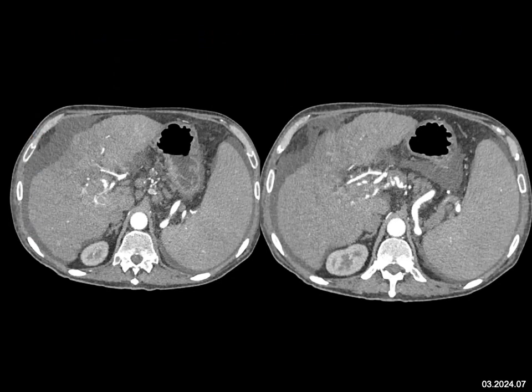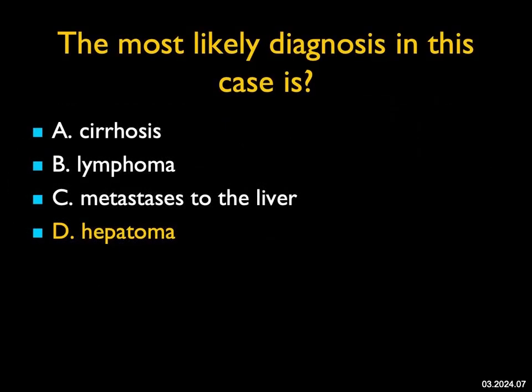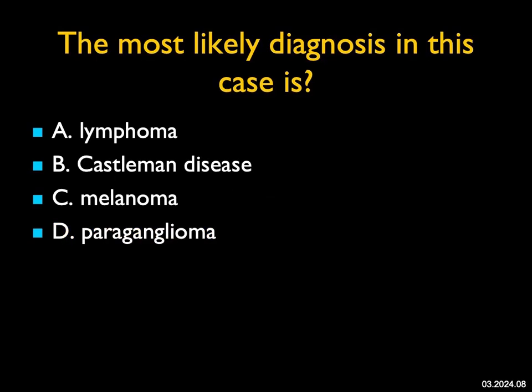The most likely diagnosis in this case: you see a cirrhotic liver with splenomegaly and portal hypertension, nodes in the porta hepatis, and what looks like an infiltrating tumor in the pancreas with neovascularity and encasement centrally. Yes, the patient has cirrhosis, but this is not lymphoma and not metastatic disease. This is a hepatoma arising in a cirrhotic liver with neovascularity and vascular encasement — a very nice example. Sometimes hepatomas on CT don't have a lot of mass effect but they are infiltrating.